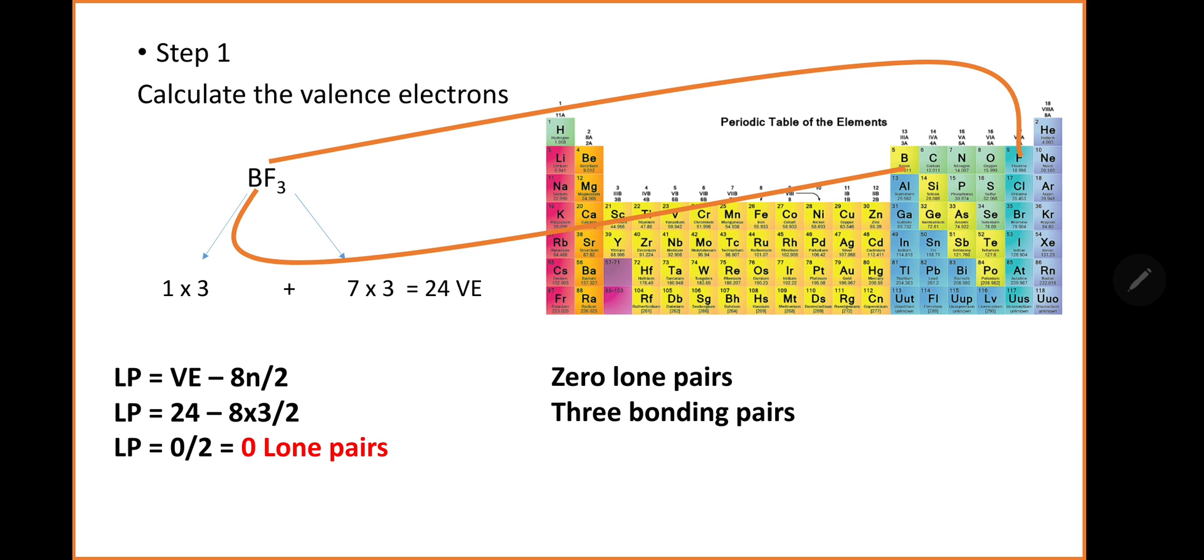I will do a separate video on all the exceptions, but for now, we just need to remember that boron does not follow that rule. So it's an exception and we'll have 3 bonding pairs.